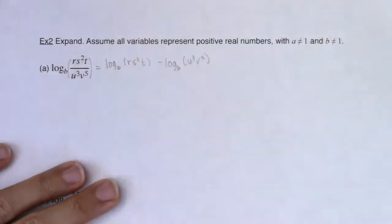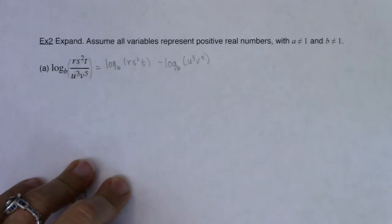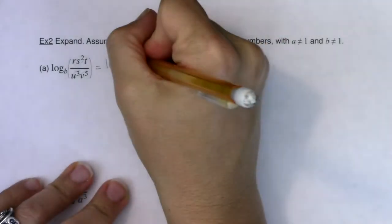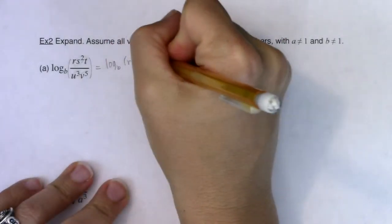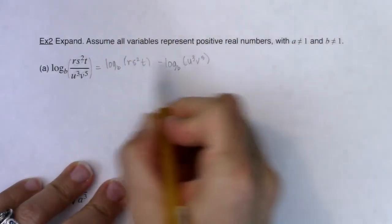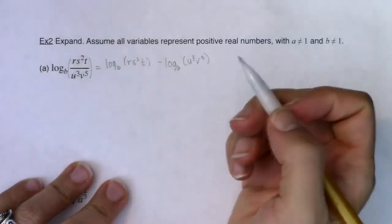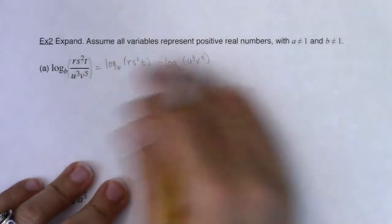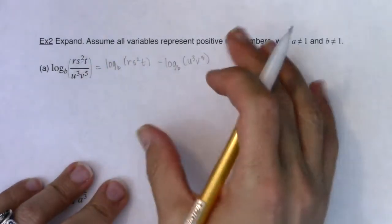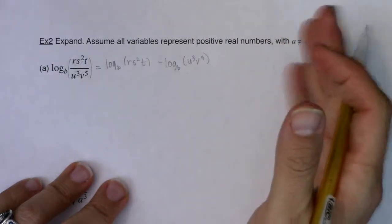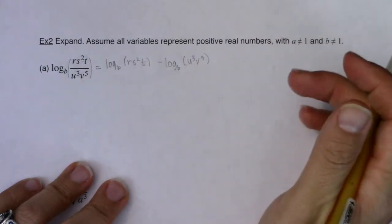You don't have to put parentheses around that argument. The argument is a monomial, so it doesn't technically need parentheses, but you're more than welcome to do that if it helps you keep the problem clearer.